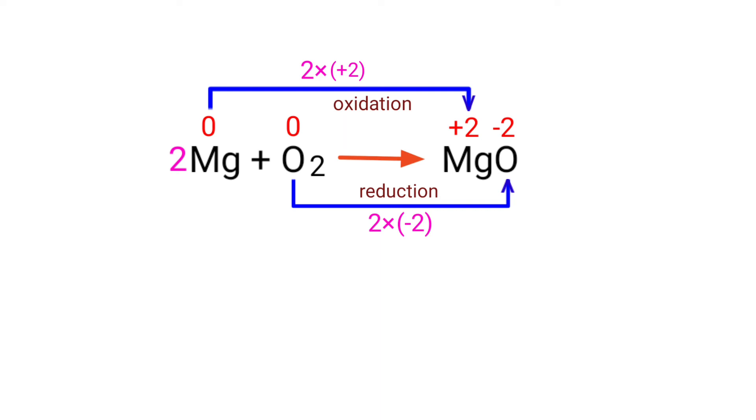Now you can write the equation as 2Mg plus O2 gives us MgO. Now you can balance the number of atoms in this equation.